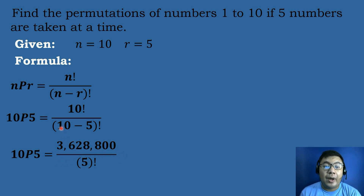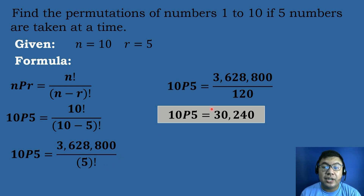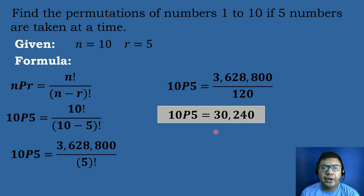All over the quantity 10 minus 5 factorial, which equals 5 factorial. So 10P5 equals 3,628,800 over 5 factorial — that is 5 times 4 times 3 times 2 times 1, which equals 120. Simplifying: 3,628,800 divided by 120 equals 30,240. Therefore, there are 30,240 permutations of numbers 1 to 10 if we use 5 numbers.